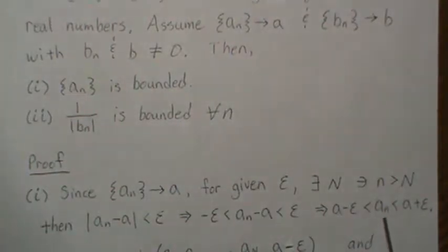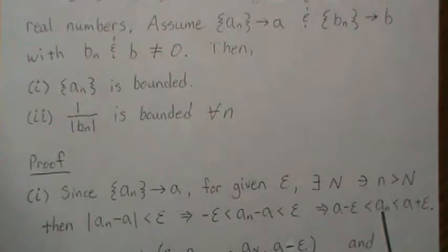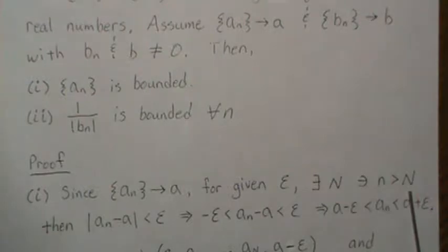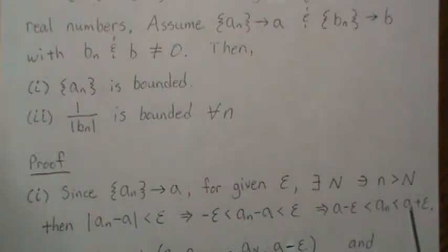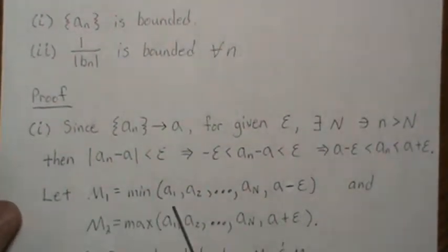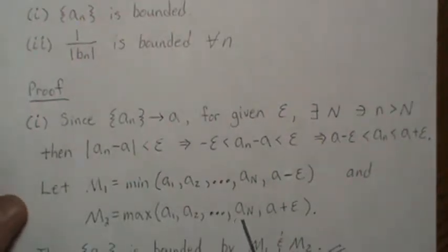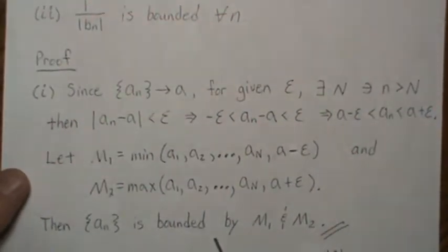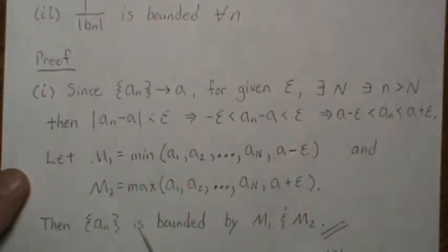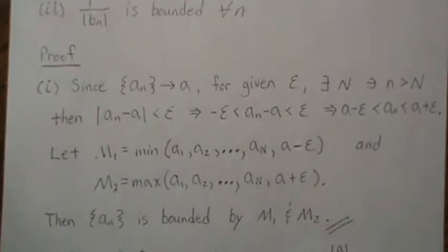So if we think about it, An, once it gets past capital N, is always bounded between these two numbers. We don't know what happens for the first capital N observations, but once it gets past, we know we're between there. If we let M1 be the minimum of the first capital N observations and this number, and M2 be the maximum of the first capital N numbers and this number, then An is bounded by M1 and M2 — the sequence never goes below M1 and never above M2. So it is bounded.